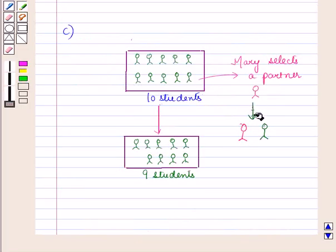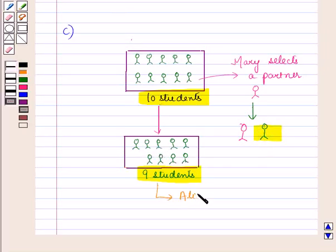So now after Mary's selection there is a change in the total strength of the class because the person selected by Mary cannot be the partner of Alice. Now Alice selects a partner from a class of nine students. Now from here you can see that Mary selects a partner from a class of ten students and then after Mary's selection Alice selects a partner from a class of nine students. So Mary's selection has an effect on Alice's selection of partner. Therefore the two events are dependent.